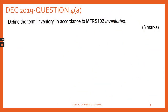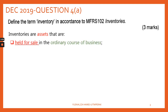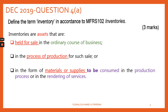Question 4a asks you to define the term 'inventory.' Inventories are assets held for sale in the ordinary course of business — in our case, the business of making and selling pine wood cabinets — or in the process of production. They are also in the process of production, or in the form of materials or supplies to be consumed in the production process. In our case, the unfinished pine planks are to be consumed in the production process of manufacturing them into the finished product cabinet.